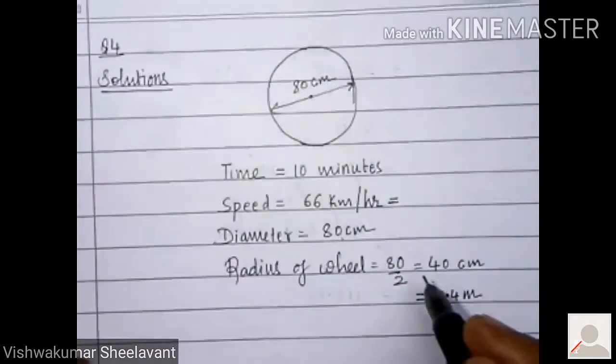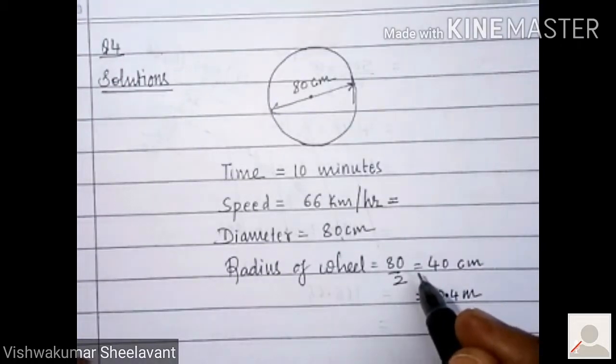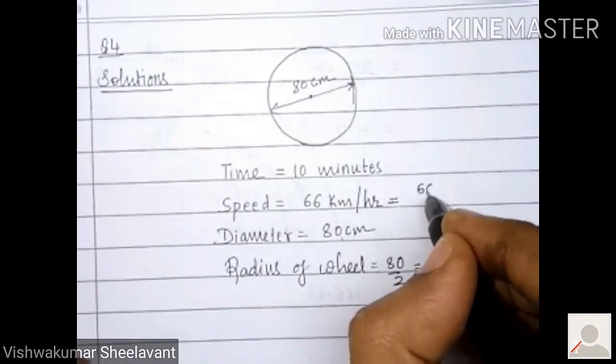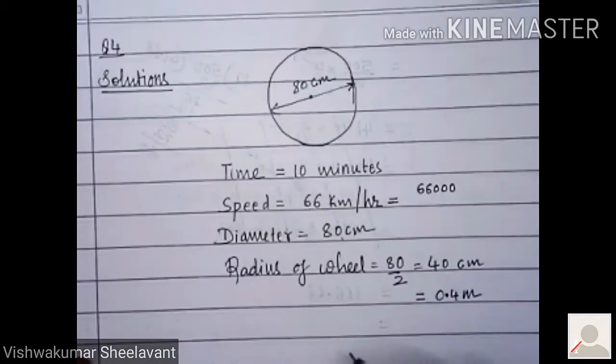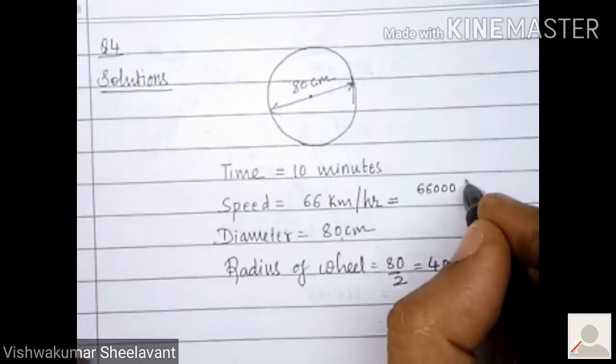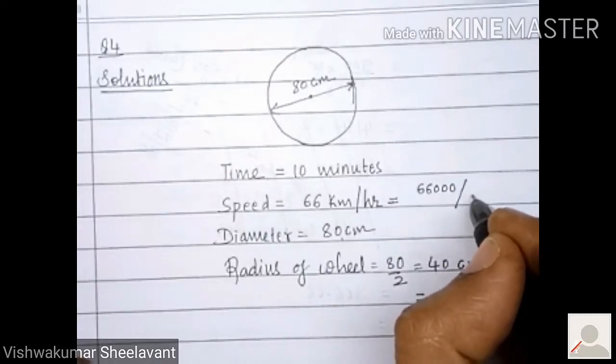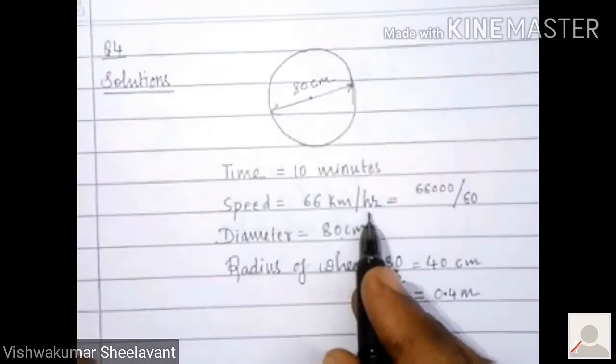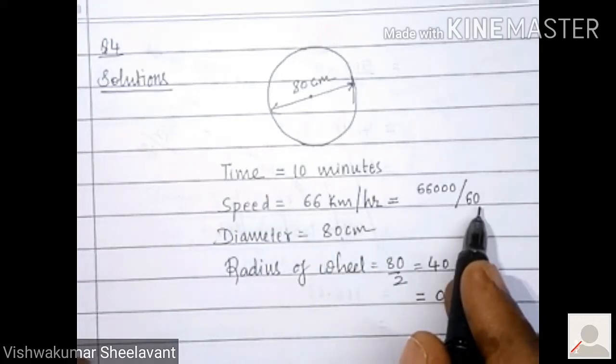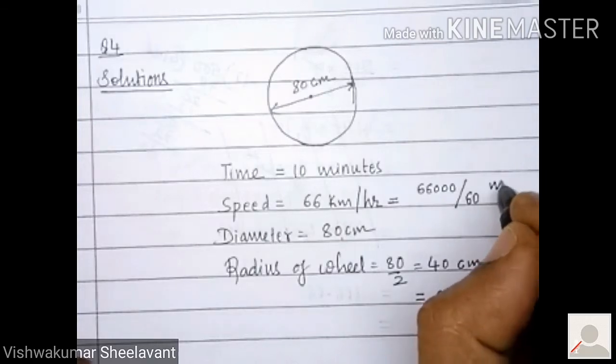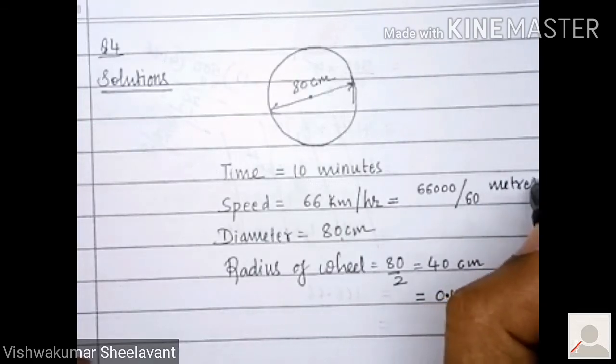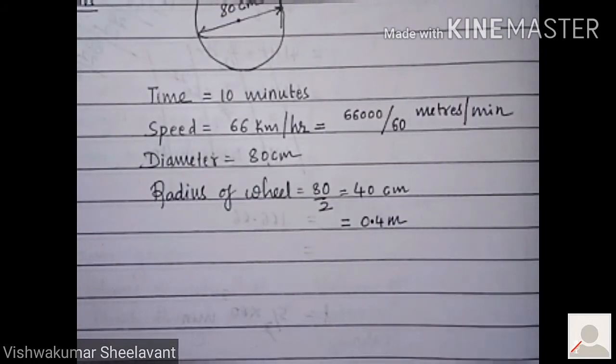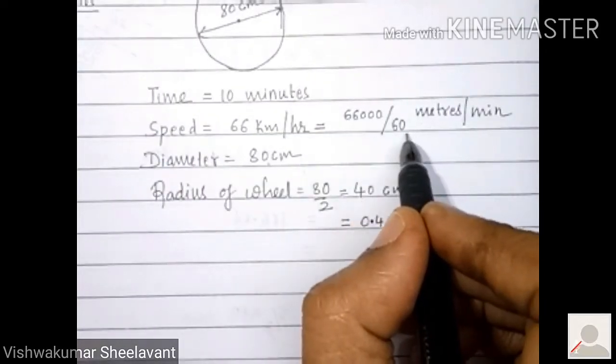Convert the speed to meters per minute. If you do that, 66,000 meters divided by 60, because it is per hour. If you divide that by 60, it will become per minute. What is the speed now? 66,000 divided by 60 meters per minute.